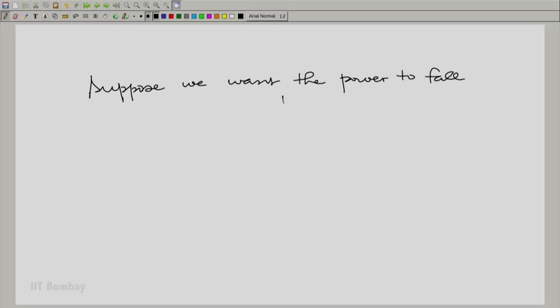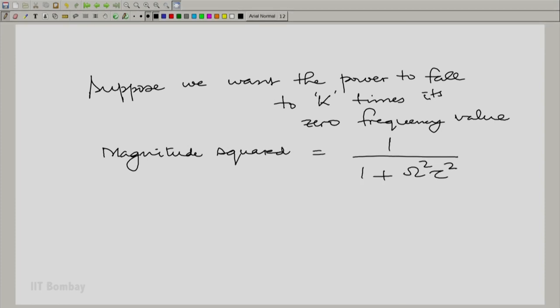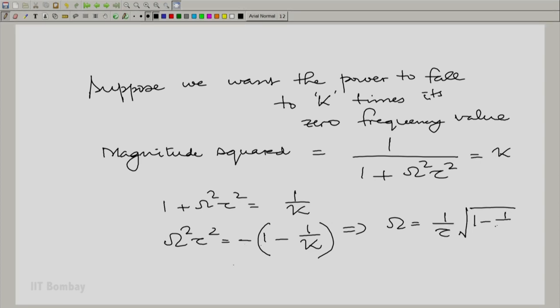Let us get a feel. So in general, if I want the power to fall by a ratio k as compared to what it is at 0, what is the omega to which I need to go to? Let us find it out. We are essentially saying the magnitude squared which is 1 by 1 plus omega squared tau squared must be k or 1 plus omega squared tau squared is 1 by k. So, omega squared tau squared is equal to minus 1 minus 1 by k. And therefore, omega is equal to 1 by tau into plus 1 by k minus 1.